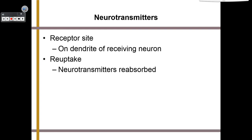Excitatory neurons can cause other neurons to fire, and inhibitory neurons will prevent other neurons from firing — just like those neuromodulators.